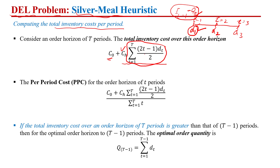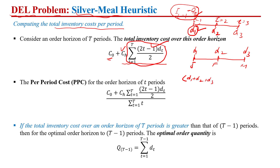To understand how we find the average inventory, let's consider the time horizon again. Against time one we have D1, time two D2, and time three D3 — so a planning horizon of three. If I place the order at the start of January to meet the demand of January, February, and March, then the inventory at the start of January is D1 plus D2 plus D3.